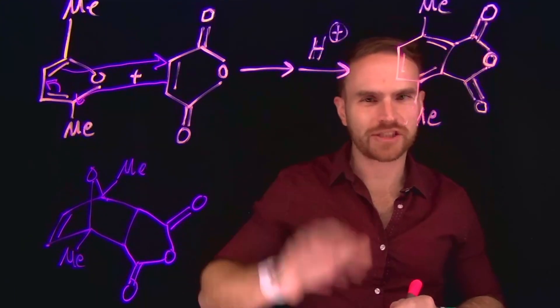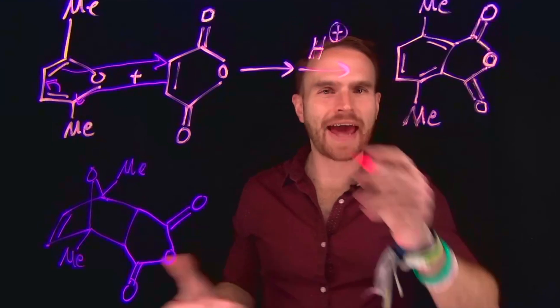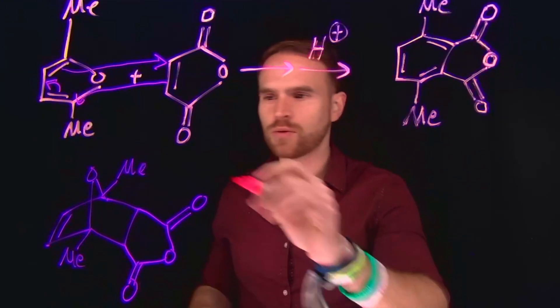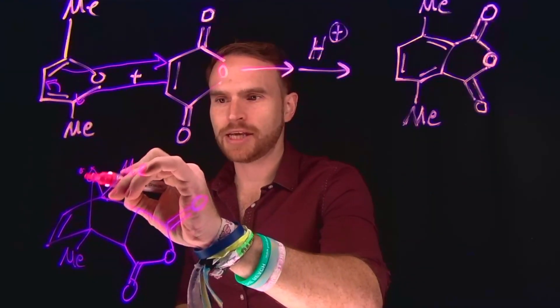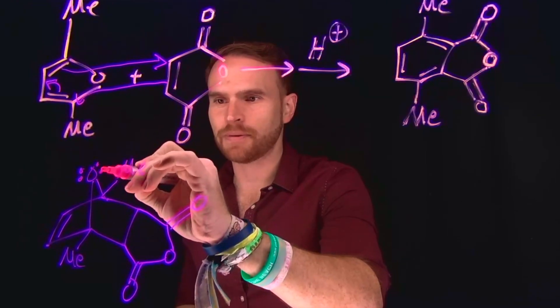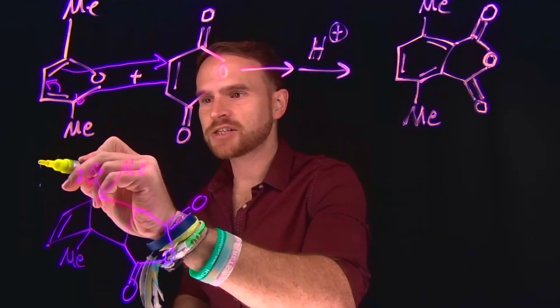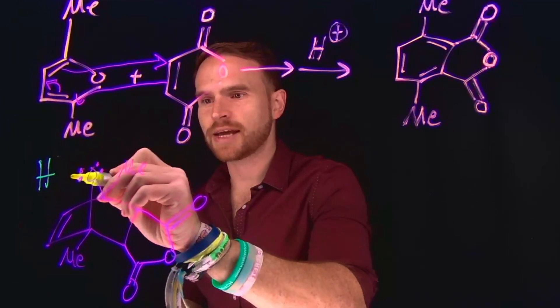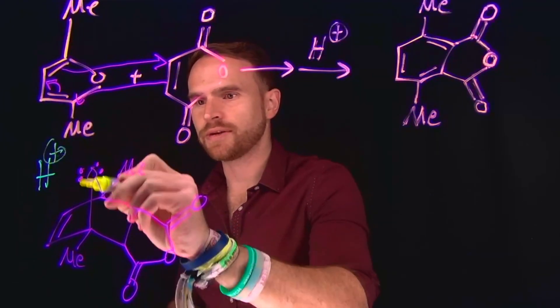And that actually is the product of this first arrow. And then you were told that you had an acid as well. And likely, the next step is going to be the protonation of this oxygen at the top of this fused ring. So we will protonate that ring, which is actually going to end up making the carbons that are attached to it susceptible to nucleophilic attacks.